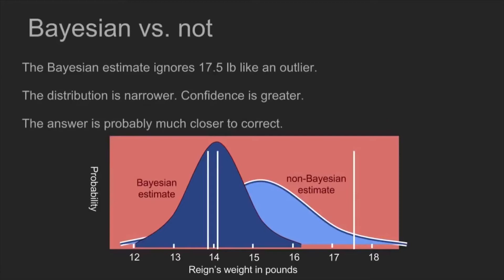And now we compare this with our original estimate. It's labeled non-Bayesian here, but more accurately, it could be Bayesian with a uniform prior. You can see that it is much broader, and also the peak of that curve is in an entirely different place. So the answer that we got is more confident because it's more centered and it's probably, based on what we know, closer to being correct.